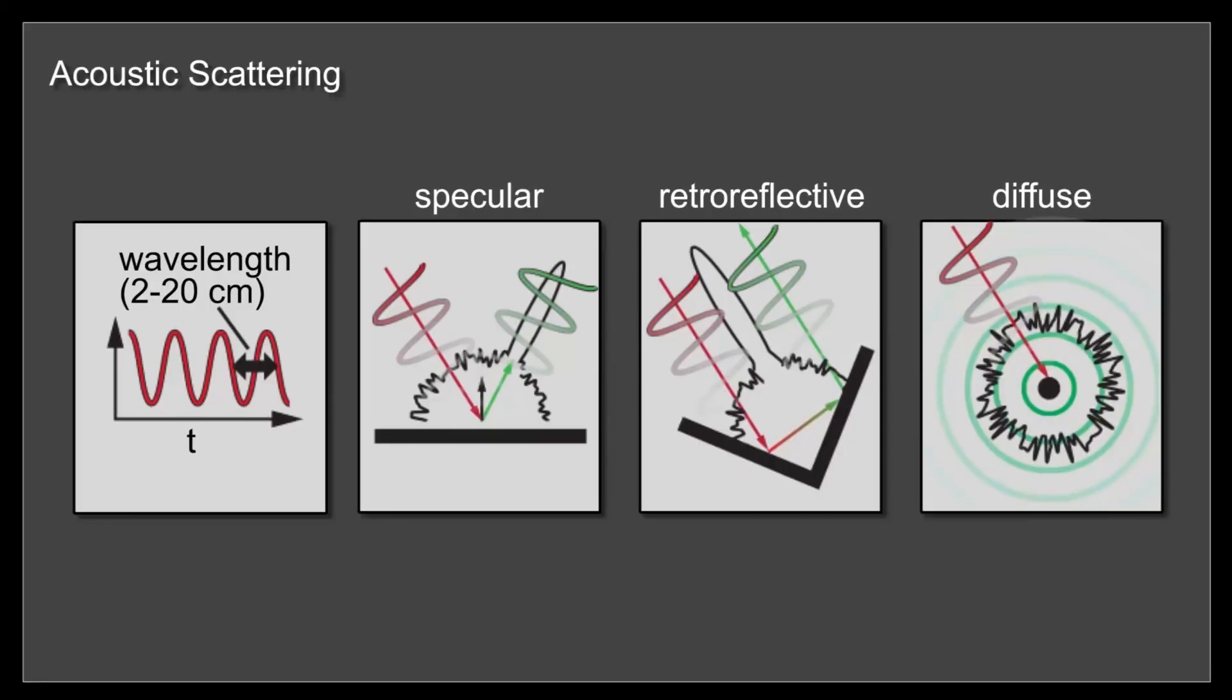We rely on the strong specular or retroreflective scattering components for our reconstruction and, similar to Wi-Fi or radar-based imaging, assume that the hidden object geometry reflects some specular signal back to the sensor array.